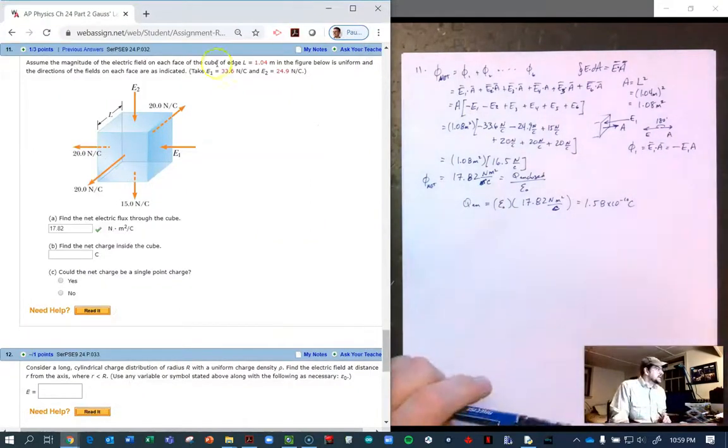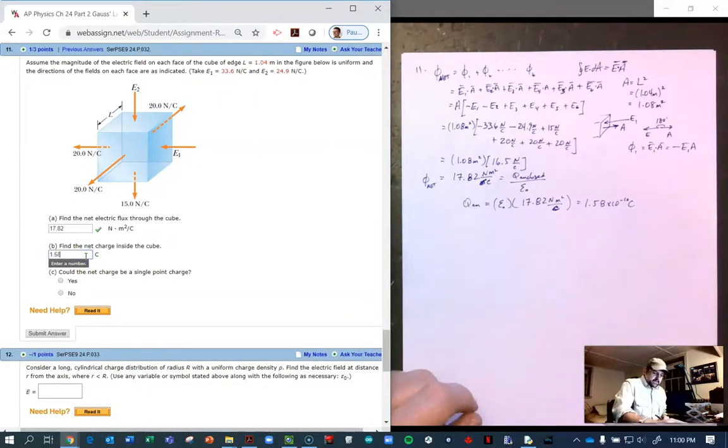And so we type that in, and this is just straight E to the minus 10.